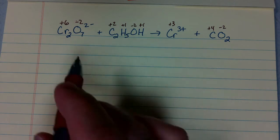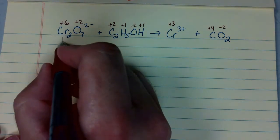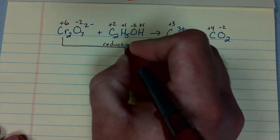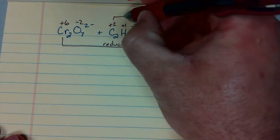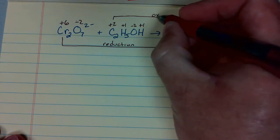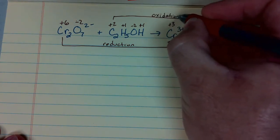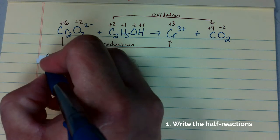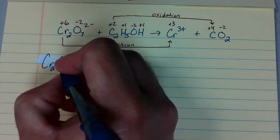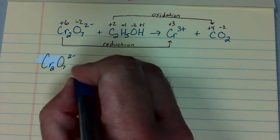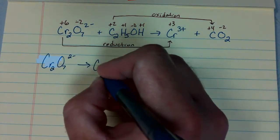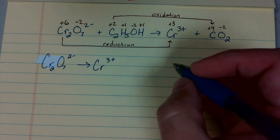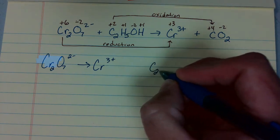So we see that we have both an oxidation and a reduction going on. Chromium changes oxidation number from positive 6 to positive 3 — that's a reduction. Carbon changes oxidation number from positive 2 to positive 4 — that's oxidation. Now we're ready to balance. For step 1, we'll write separate half-reactions for the reduction and the oxidation: the reduction half-reaction of dichromate forming the chromium 3 ion, and the oxidation reaction of ethanol forming carbon dioxide.